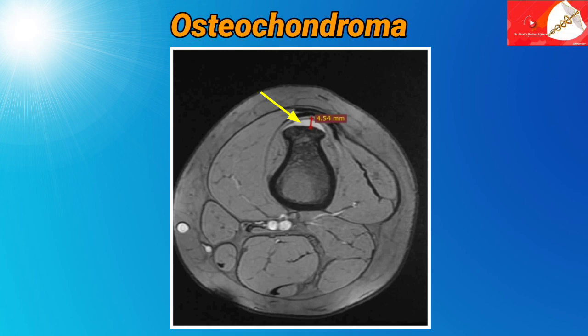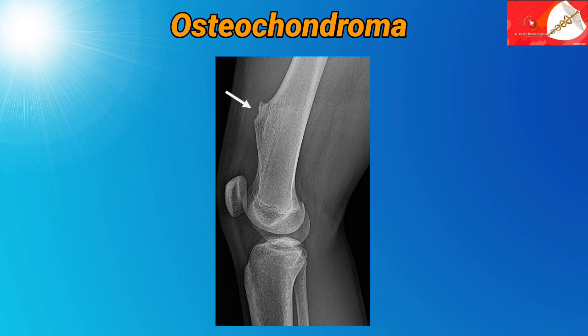In this MRI imaging of axial T2 sequence of osteochondroma in the femur, a hyperintense area of 4.54 mm suggests the presence of a cartilaginous cap.